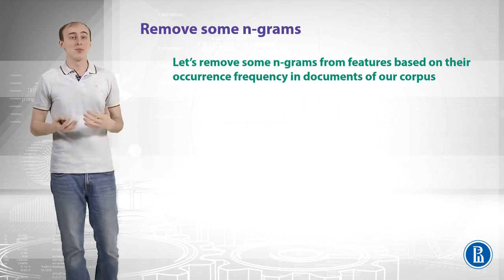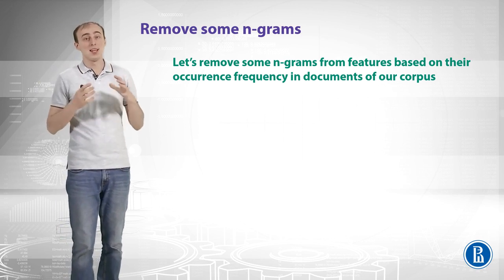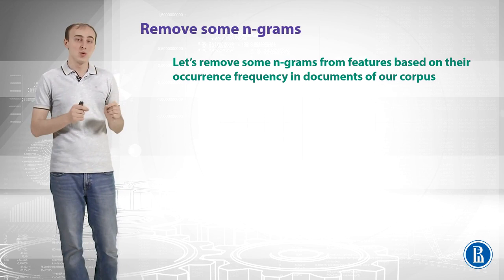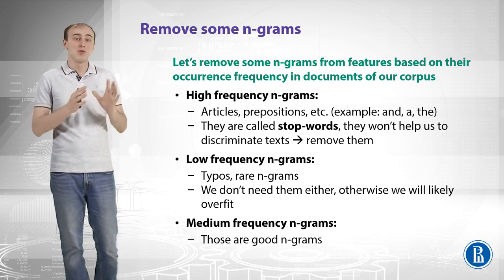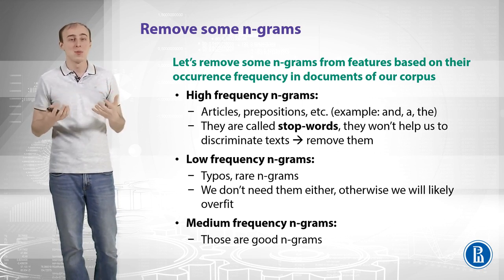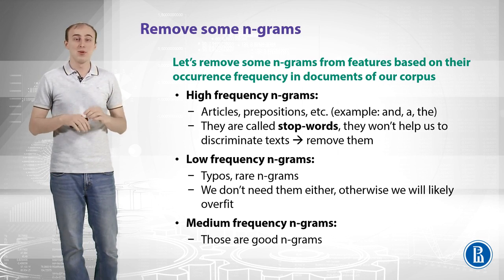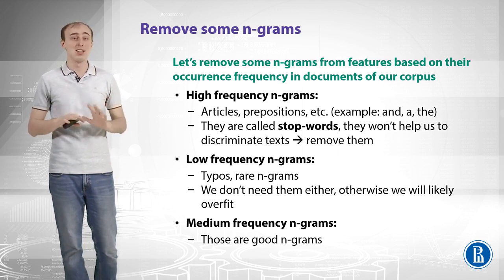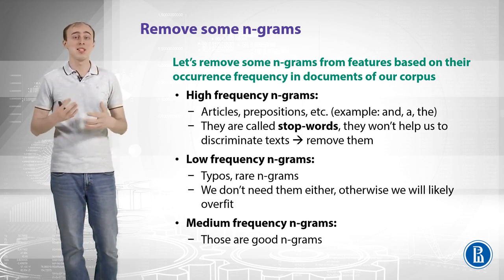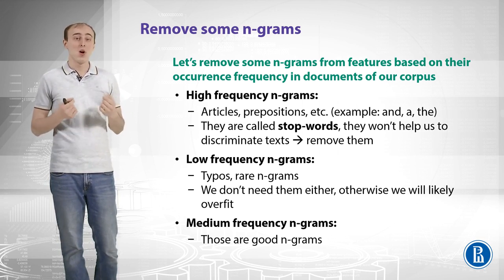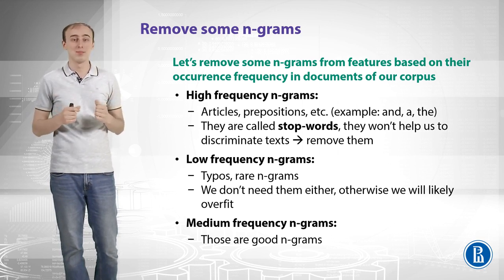To overcome that problem, we can actually remove some n-grams. Let's remove n-grams from features based on their occurrence frequency in documents of our corpus. For high-frequency n-grams seen in almost all documents — for English that would be articles, prepositions, and things like that — they're just there for grammatical structure and don't have much meaning. These are called stop words; they won't help us discriminate texts and we can pretty easily remove them.